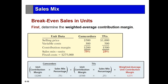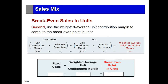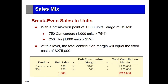Dividing total fixed costs by the weighted average contribution margin gives the break-even point in total units — both camcorders and televisions combined. Of the 1,000 total break-even units, 75% are camcorders (750 units) and 25% are televisions (250 units). To verify: camcorders contribute $150,000 and televisions contribute $125,000, covering total fixed costs. That confirms the break-even calculation.